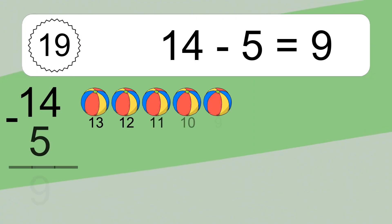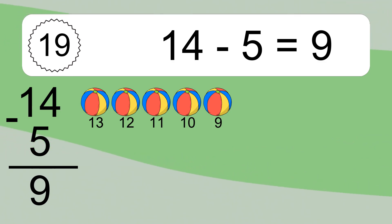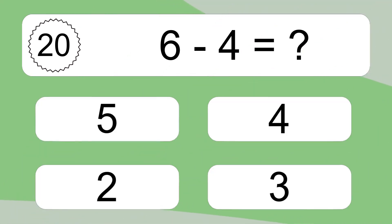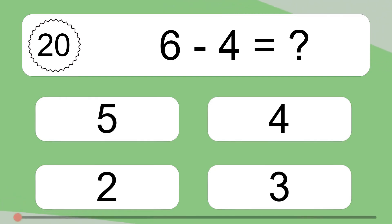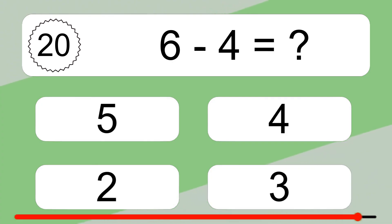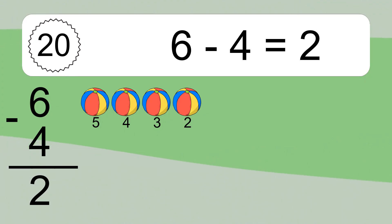14 minus 5 equals 9. Let's count it: 13, 12, 11, 10, 9. 6 minus 4 equals what? 6 minus 4 equals 2. Let's count it: 5, 4, 3, 2.